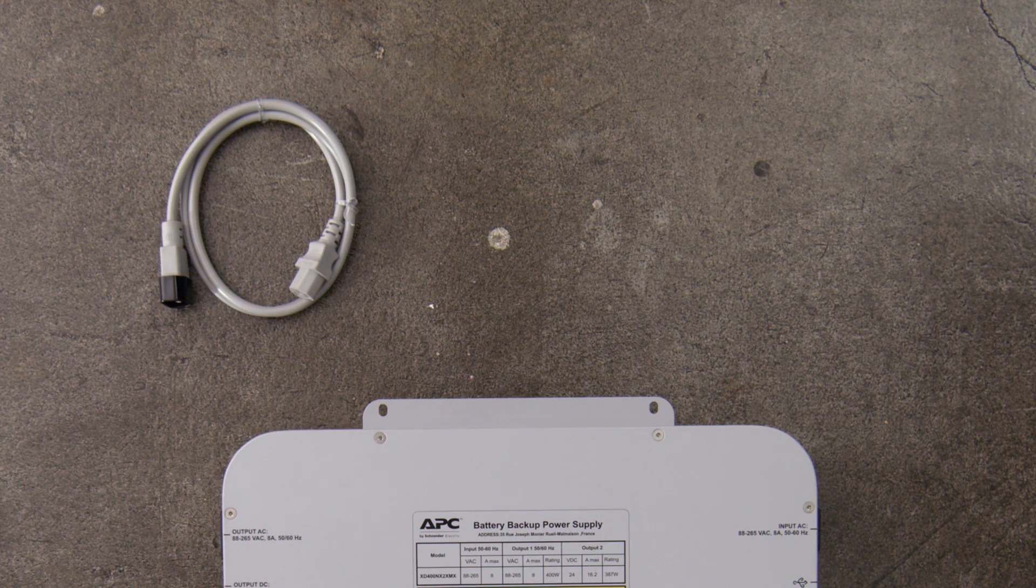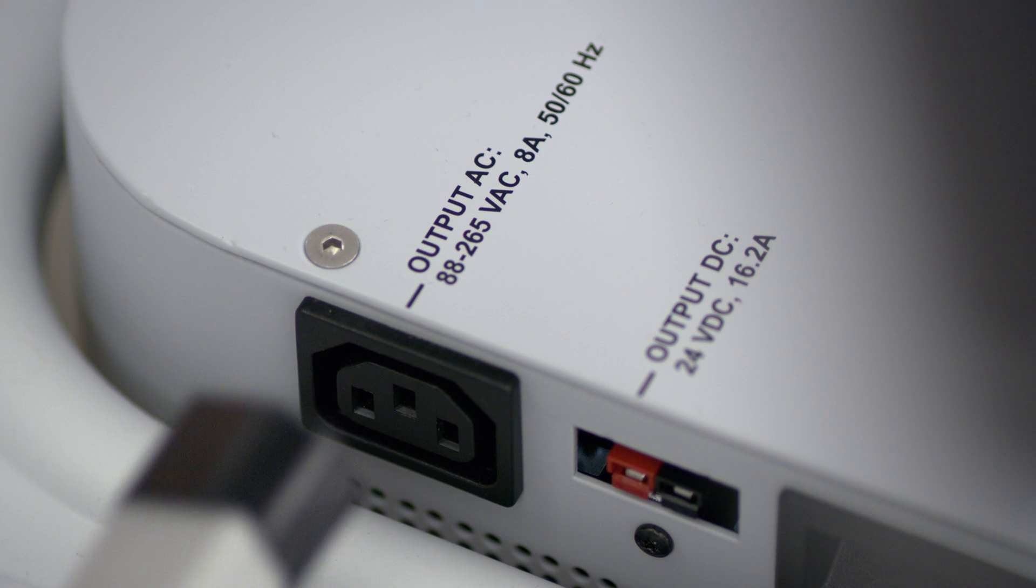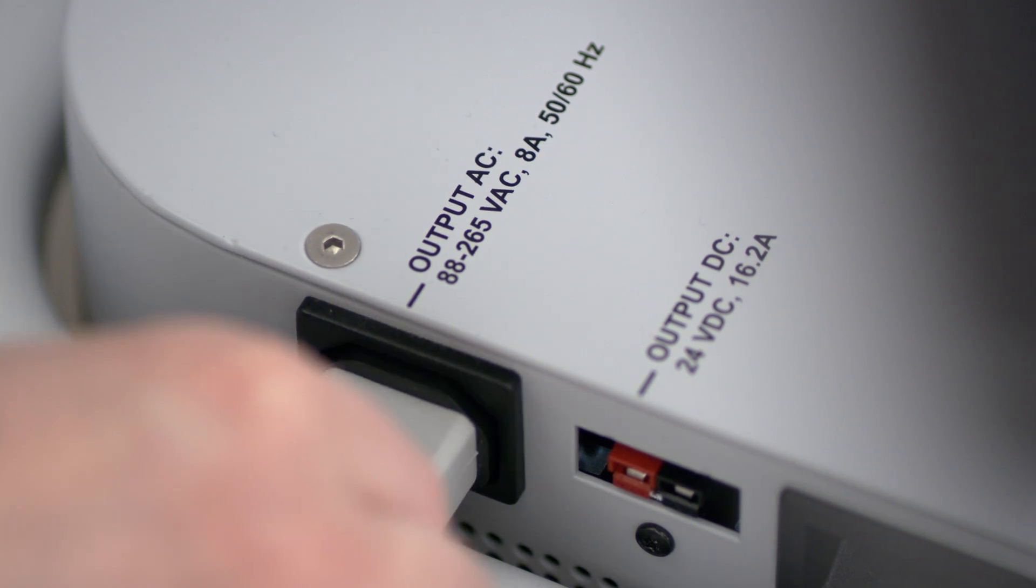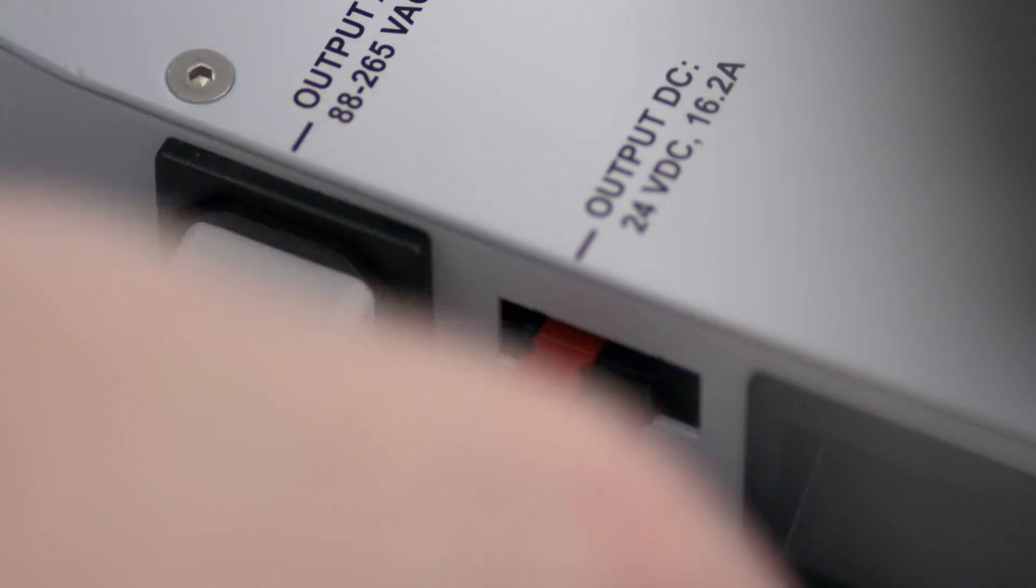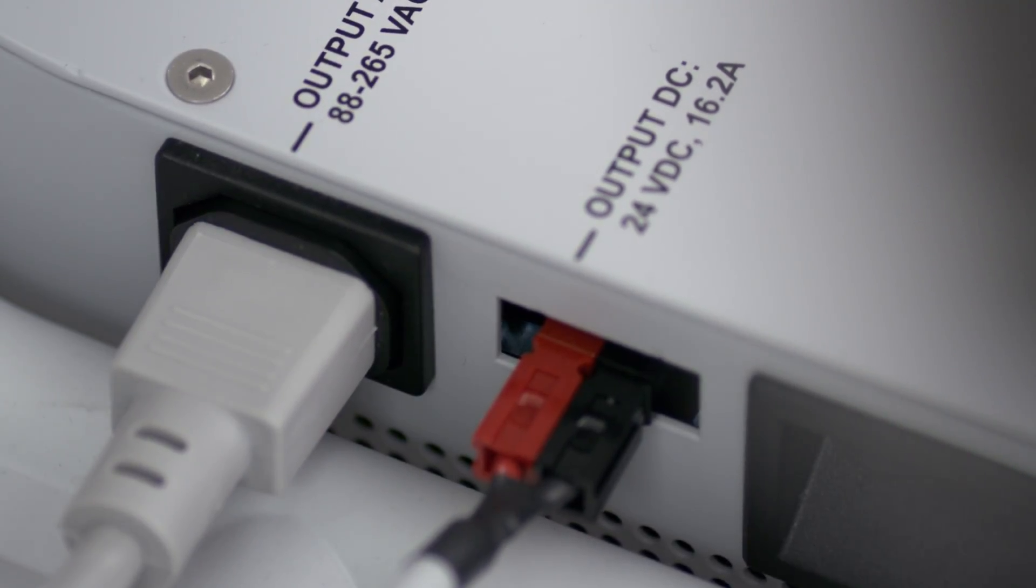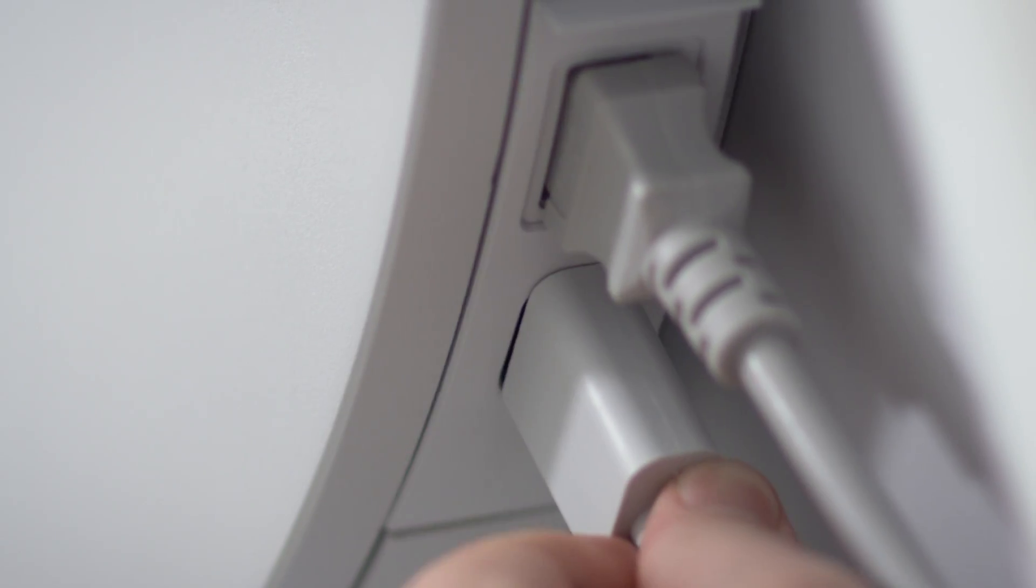Now locate the three cables from the charge mobile battery box. Plug the three pin power cable into the output AC port on the battery and connect it to the corresponding port on the Surface Hub. Next, plug the two pin cable into the output DC port on the battery and connect it to the port on the device.